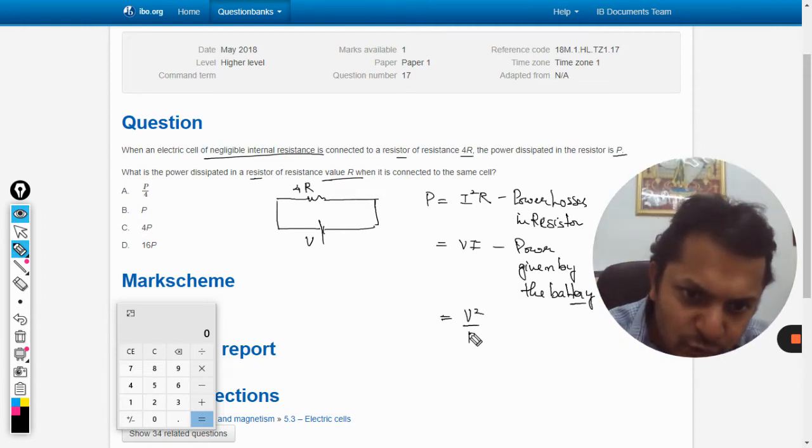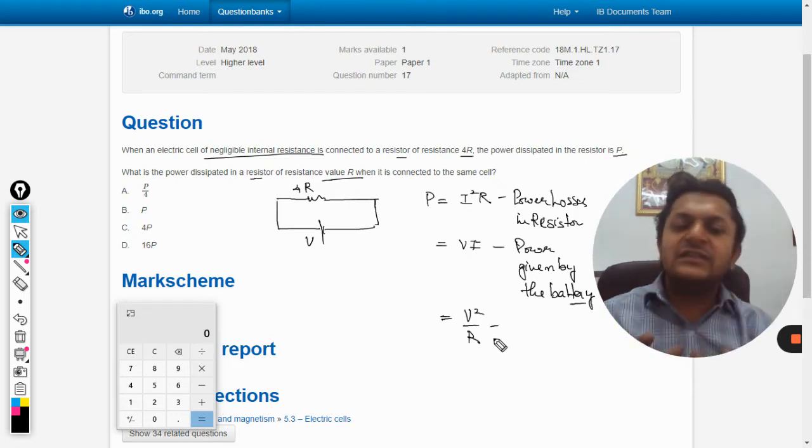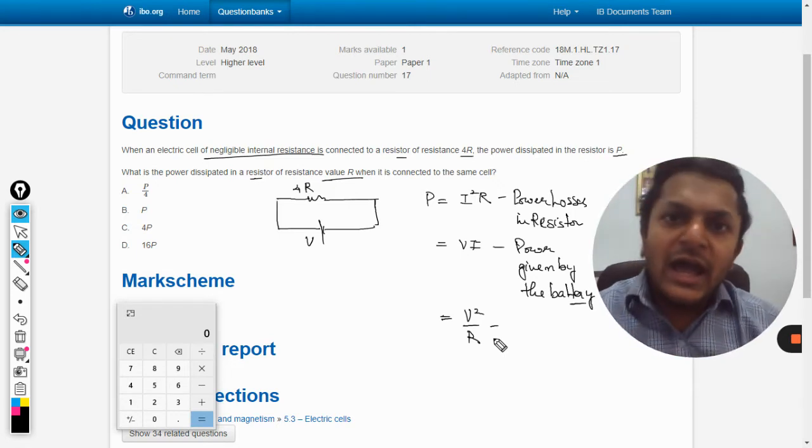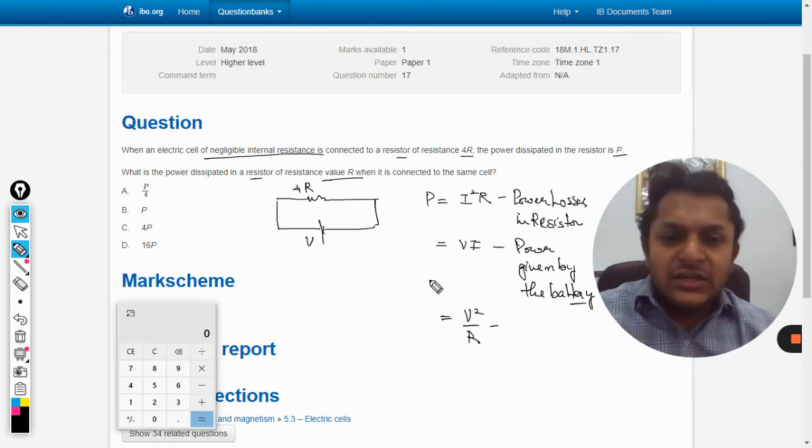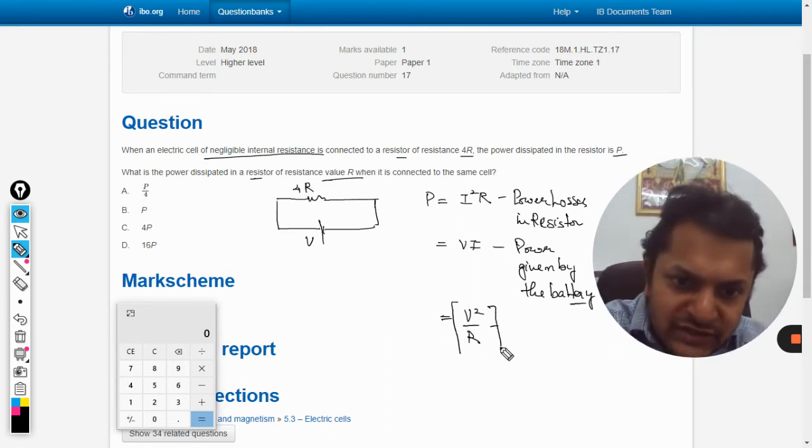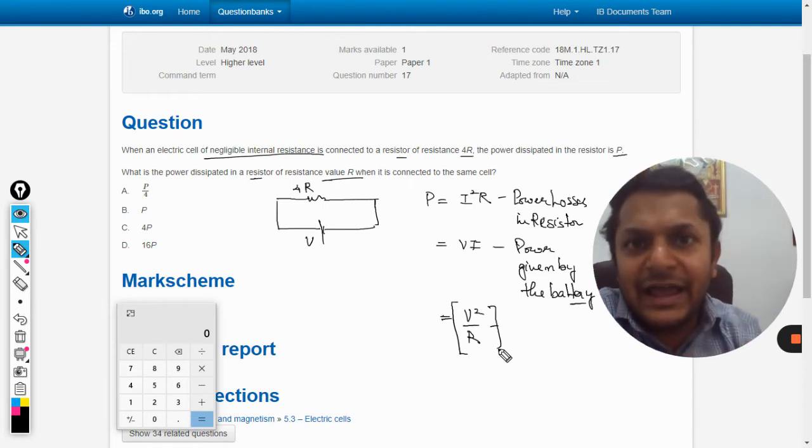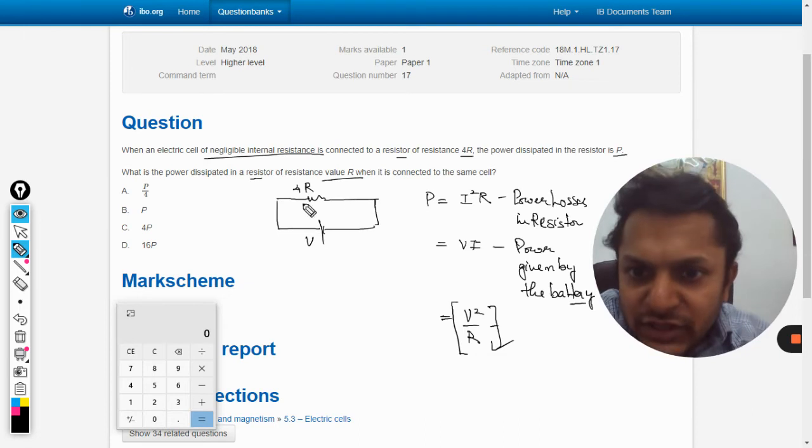Now this is another formula to calculate the power, and this is one of those formulas which are very rarely used. In this question we are going to use this because we need not find the current I and we can directly relate the voltage and the resistance.